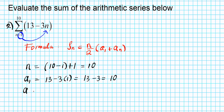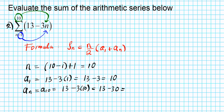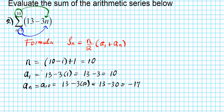For the last term, a sub n — which is a sub 10 — plug the final position into the explicit formula: a sub 10 equals 13 minus 3 times 10, which yields 13 minus 30, giving negative 17. That's the nth term of the arithmetic series. We are looking for S sub 10, the sum of the first ten terms of the arithmetic series provided in this summation notation.